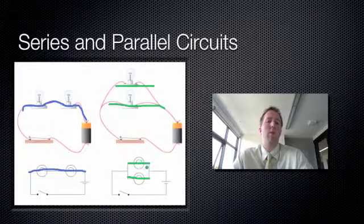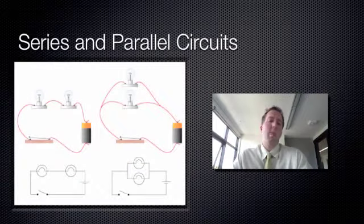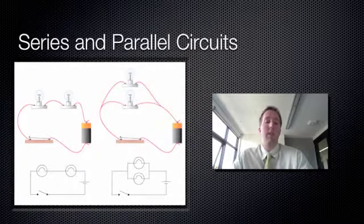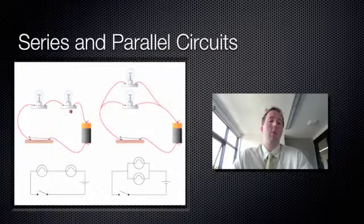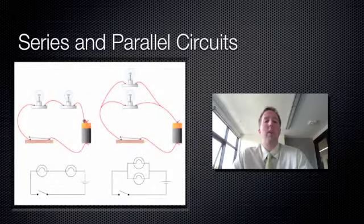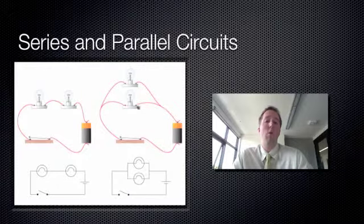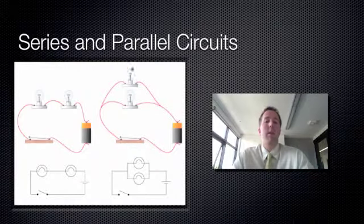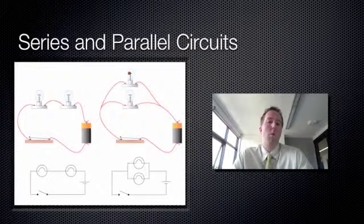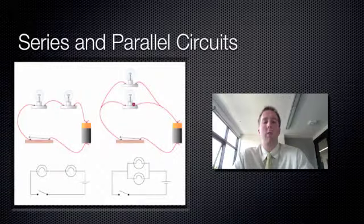Something that's different about series and parallel circuits is basically the way that they make the globes work. In a series circuit, all of the globes share the power of the battery. So the more light globes I add to a series circuit, the less bright all of the globes become. Whereas in a parallel circuit, all of the light globes shine with equal brightness — the battery gives its full power to all the light globes. I could have 10 light globes in a parallel circuit and they'd all be just as bright as if I had one.